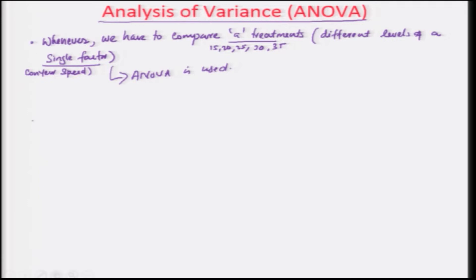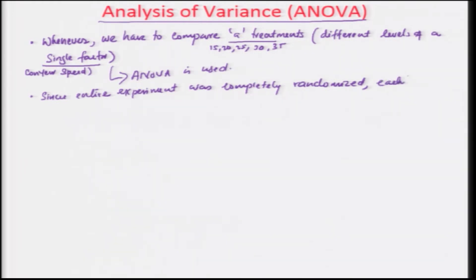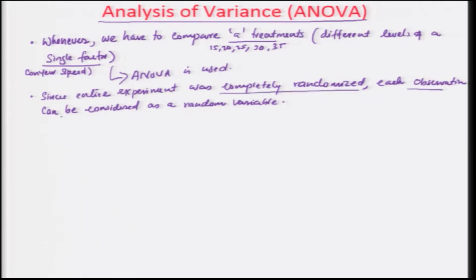Since the entire experiment was completely randomized, each observation can be considered as a random variable. Because you completely randomized the experiment, each observation can be compared as a random variable, and the following analysis matrix is set up.